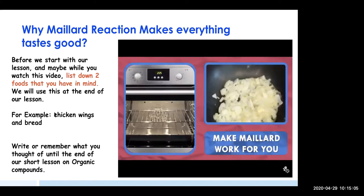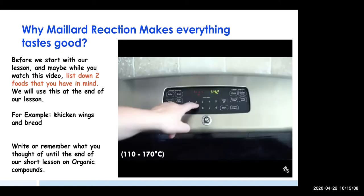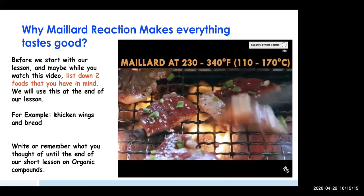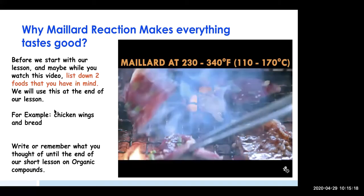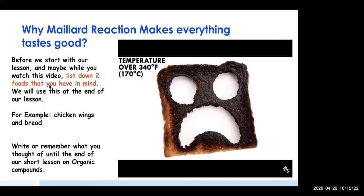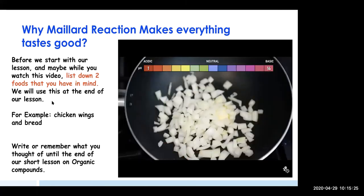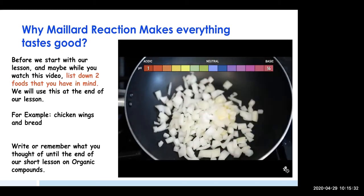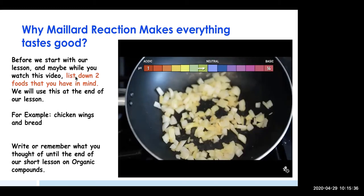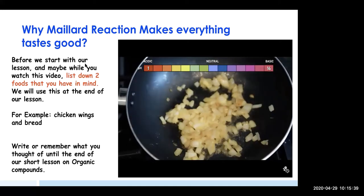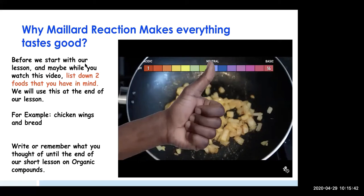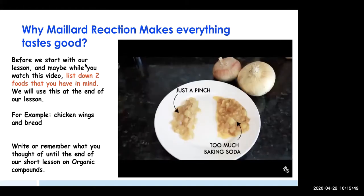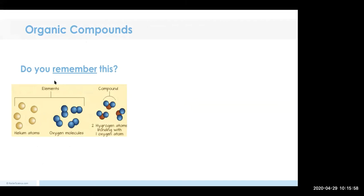Some tips to make the Maillard reaction work for your food: it works best between 230 and 340 degrees Fahrenheit — in this range, chemical reactions are faster and heat evaporates excess water. If the temperature is too high, burning creates charred bitter flavors. If you're in a rush, increasing the pH of some foods speeds up browning — for example, add a tiny pinch of baking soda along with salt when browning onions; they'll brown faster and have a sweet caramel-like flavor.